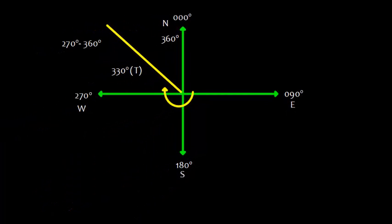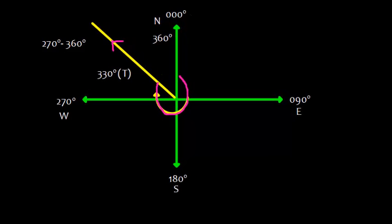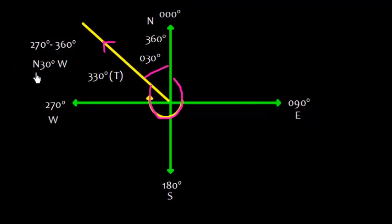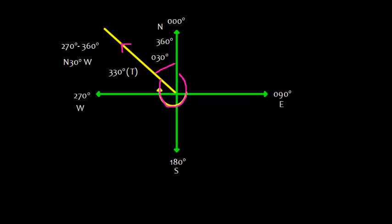Now let's take the last example. Suppose the course is 330° true. The angle from north is 30 degrees, because 360 minus 330 equals 30. We can represent this course as N30°W.